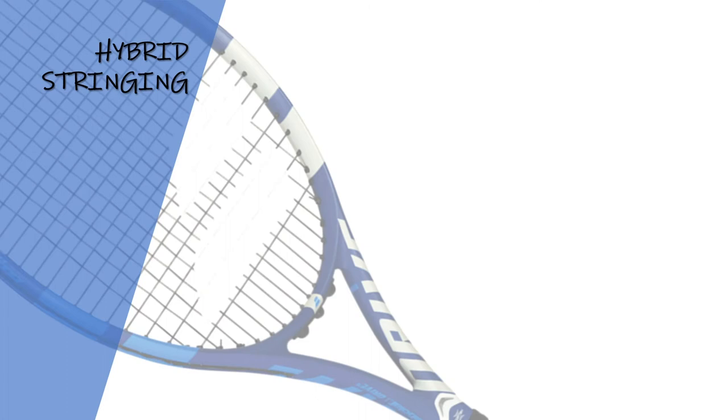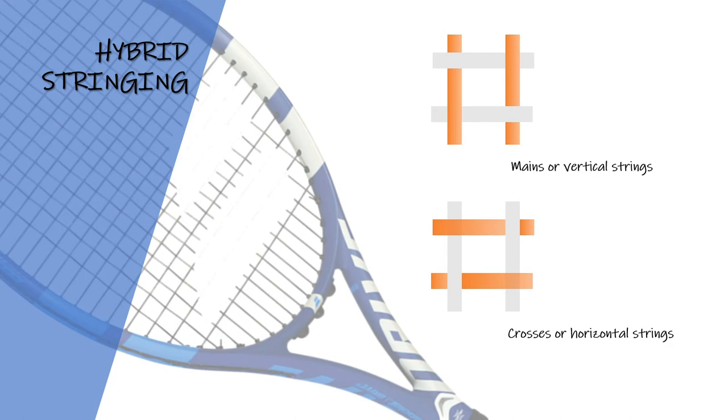Wraps and multifilament strings are often used in hybrid stringing. However, different combinations of strings can be used. Hybrid strings use different strings for the mains and crosses. What you should know is that the mains and crosses each have a different role in string performance. Mains will influence the spin of the ball and durability, while crosses will affect power and comfort.